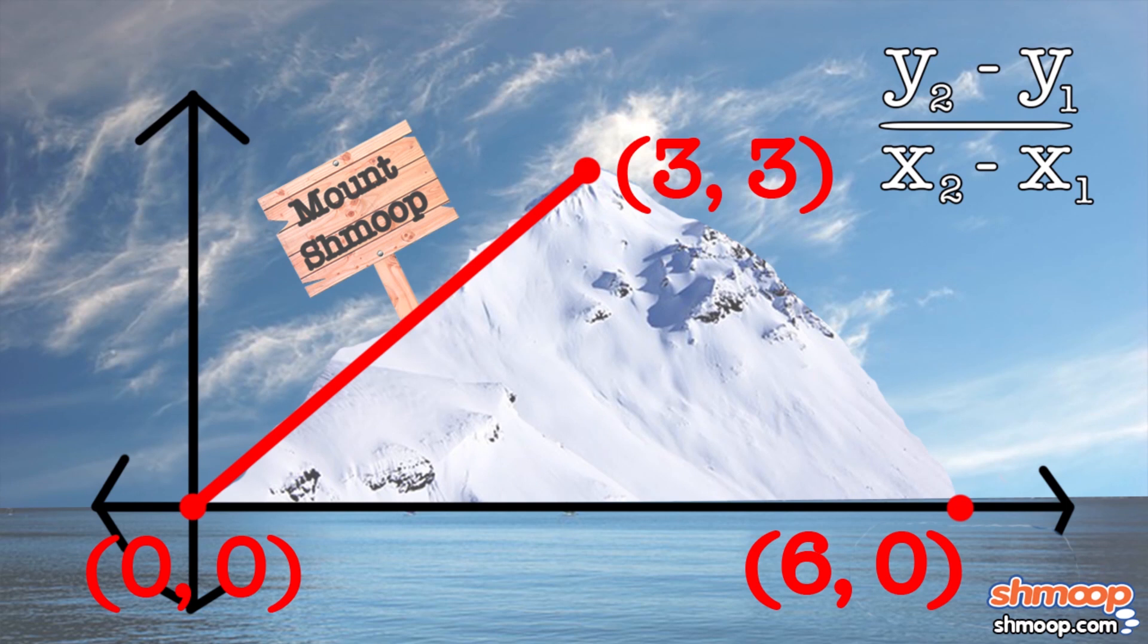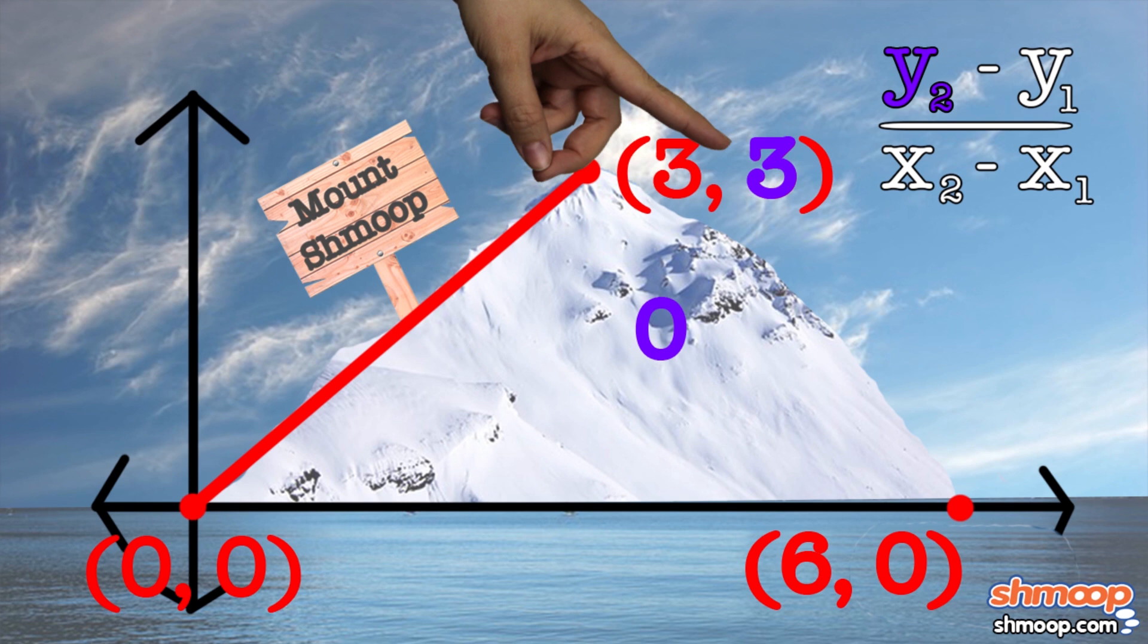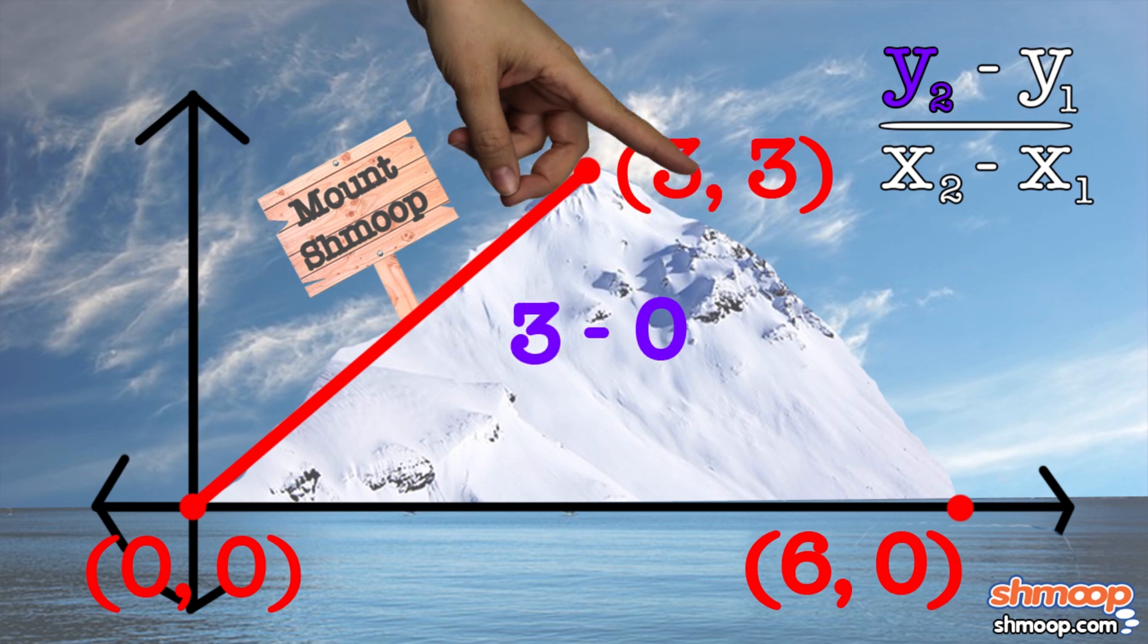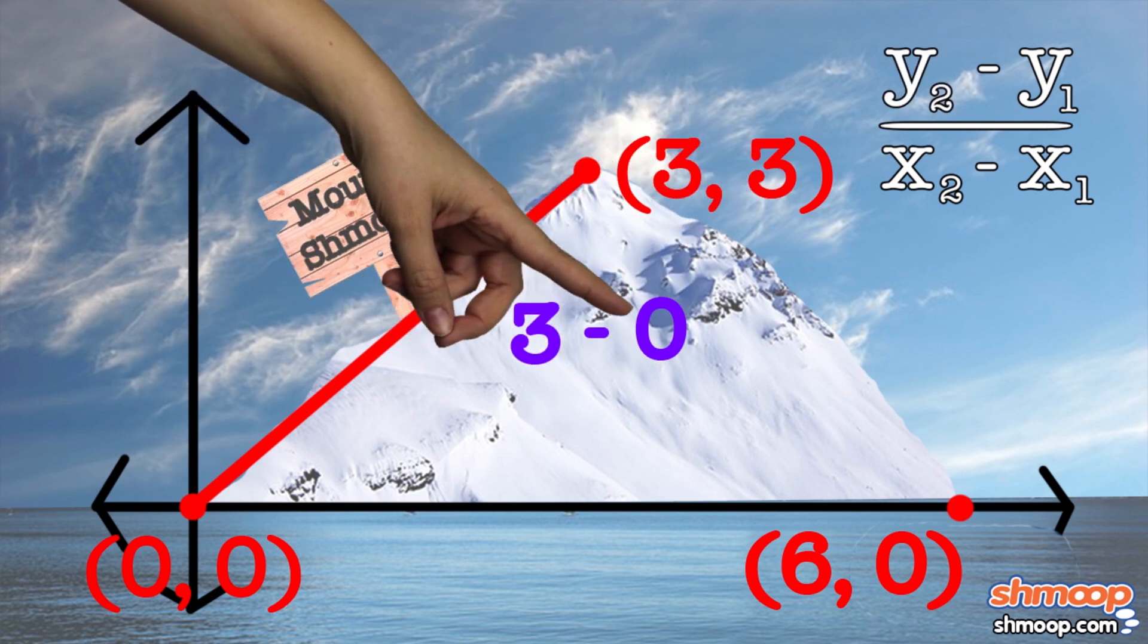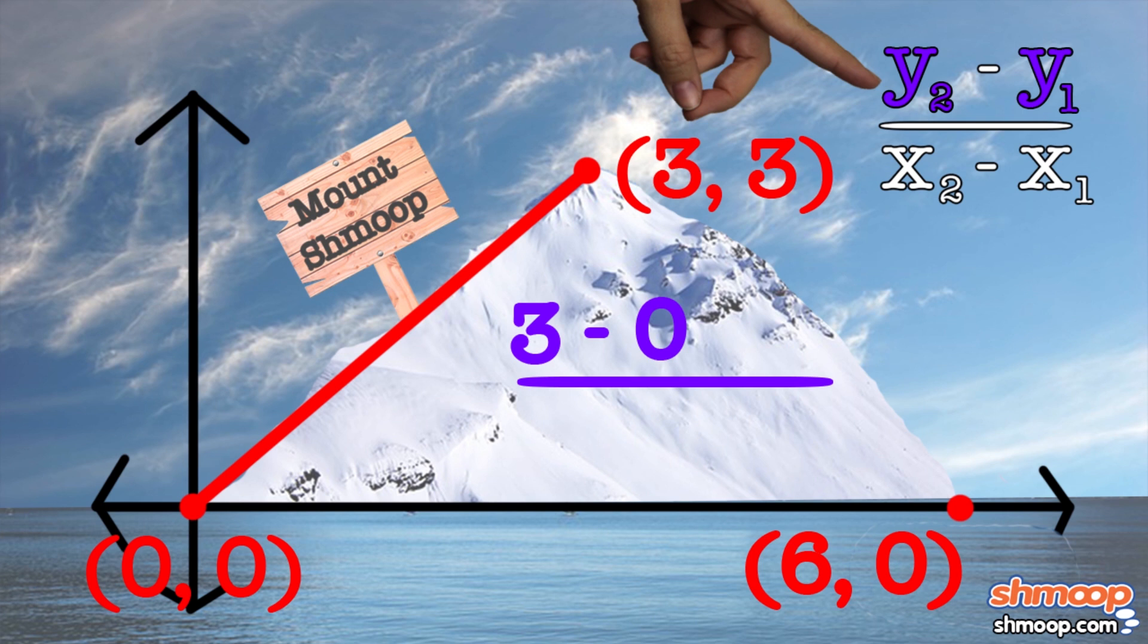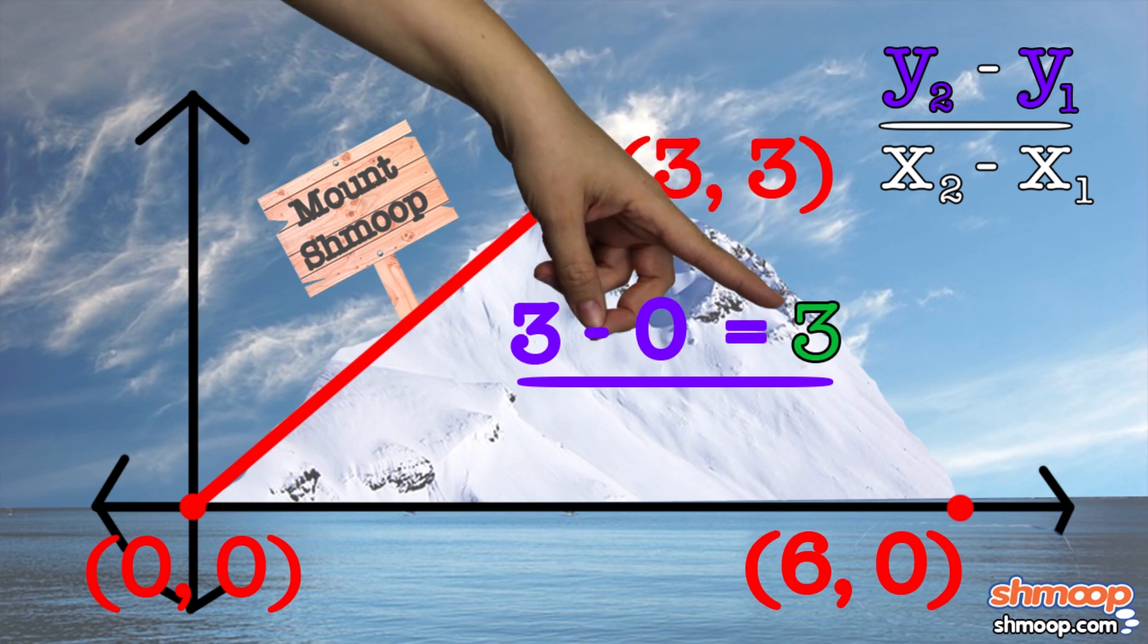To get the slope of a line, you just subtract this number, the y coordinate for the first point, from the y coordinate for the second point, this one here. So in this case, we have this 3 minus this 0, and the top number in the fraction is 3. Great, halfway there.